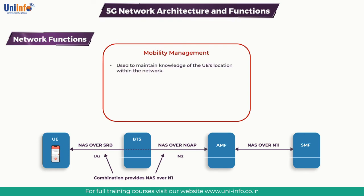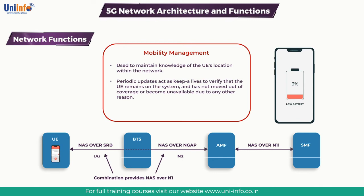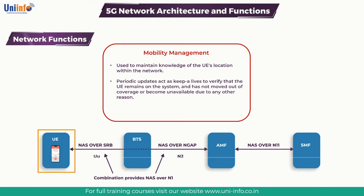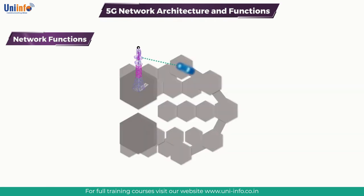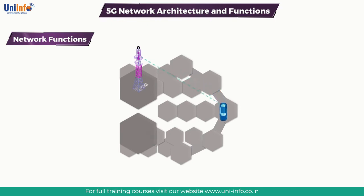Mobility management is used to maintain knowledge of the UE's location within the network. The UE is required to complete periodic registration updates after initial registration. These periodic updates act as keep-alives to verify that the UE remains on the system and has not moved out of coverage or become unavailable for any other reason — for example, battery drain. The UE is also required to complete updates due to mobility, triggered if the UE moves outside the current registration area, that is, outside the tracking area or list of tracking areas within which the UE is currently registered.